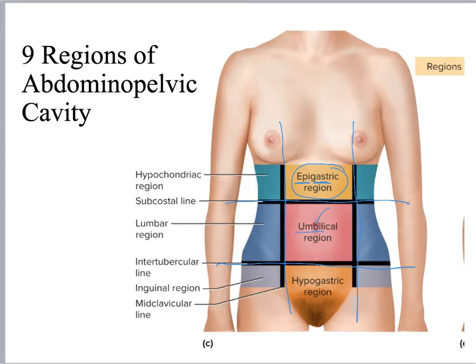The umbilical region — the real name for the belly button is umbilicus, so that's around your belly button. Hypogastric: hypo means below, gastric is stomach, so this is the area down there. Then you've got the lumbar region, the hypochondriac region, and then the inguinal region — that's your groin region.